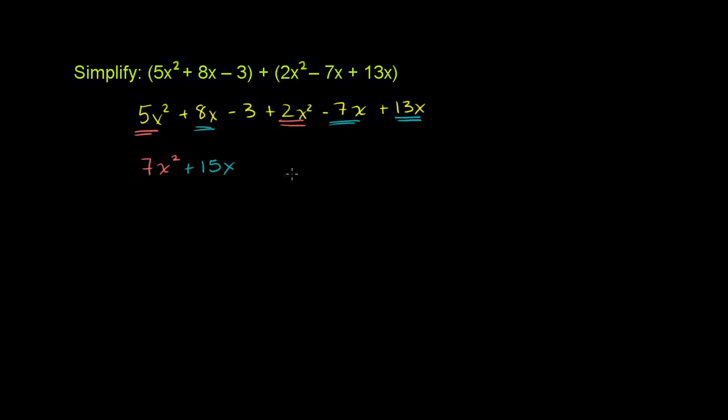8x minus 7x, oh sorry, you're going to have 14x. 8 minus 7 is 1 plus 13 is 14. Plus 14x, that's these three terms. 8x minus 7x plus 13x.